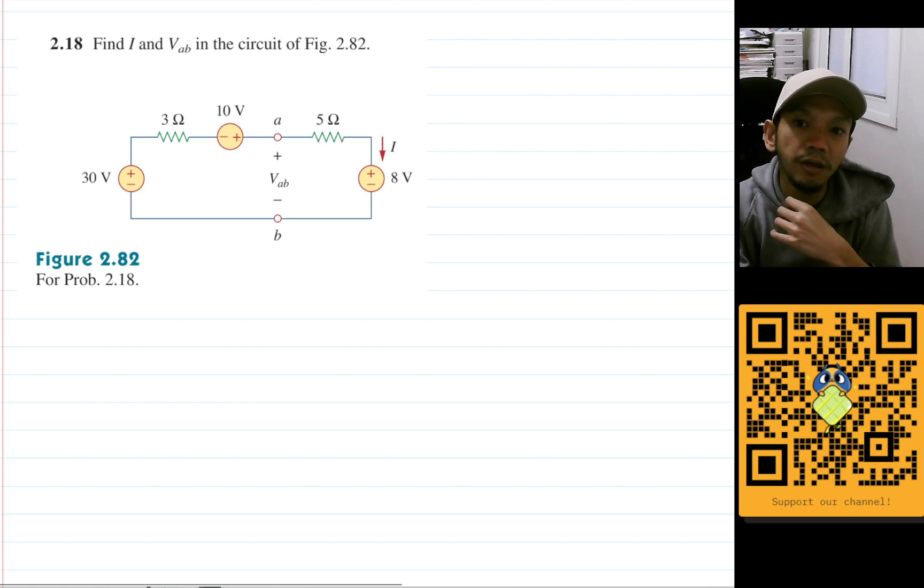Let's set the bottom-most node here as our ground, so the voltage in this node will be zero. Now let's do KVL. I think this problem will be suitable for it, so we'll use KVL and the current is I.